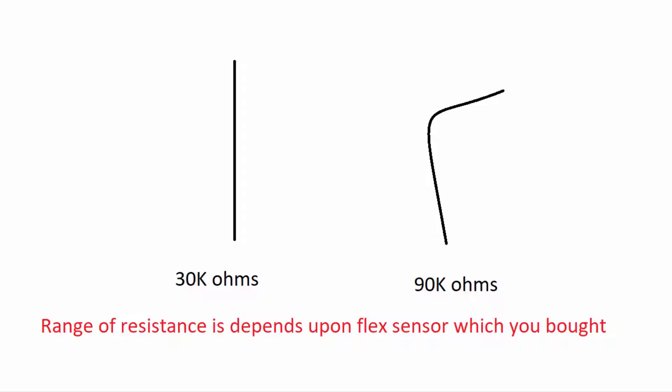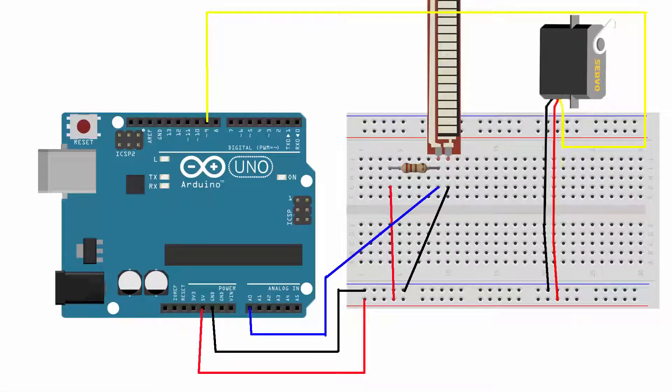This means that it won't give 0 to 5V range; we will see it later in this video. This range of resistance depends upon the flex sensor which you bought. Do connections as shown in the diagram.